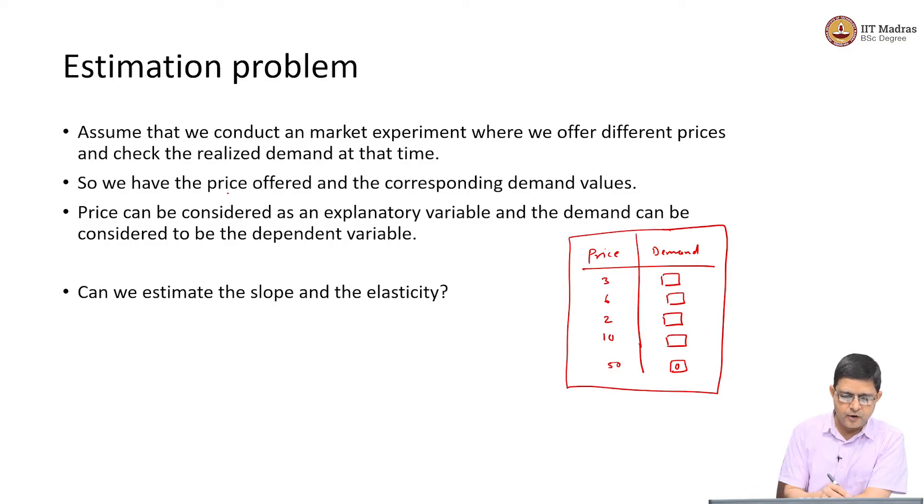Essentially we will have prices offered and corresponding realized demand values. Demand can be considered to be the dependent variable, demand is a reaction of the market, prices are the triggers for that reaction. Therefore, prices can be considered to be an explanatory variable. Prices explain the difference in the demand values.